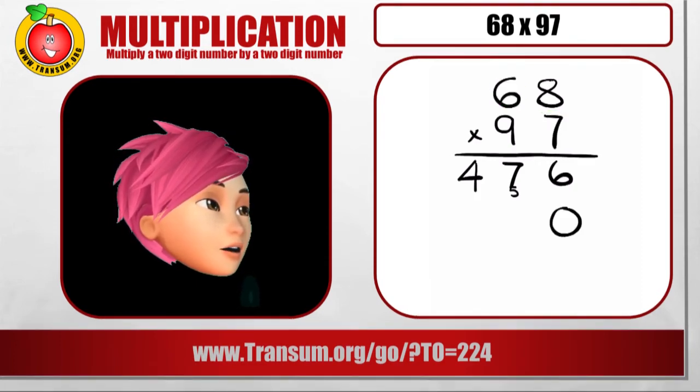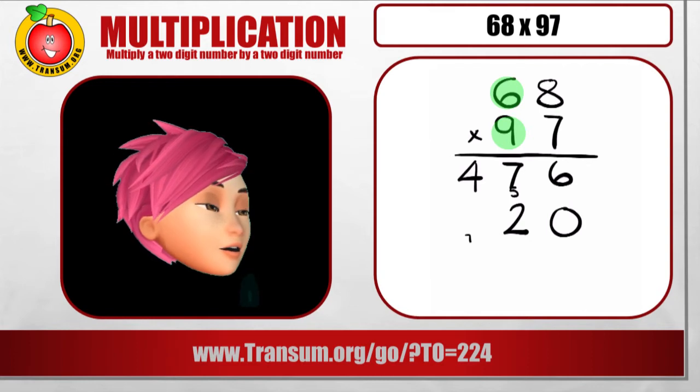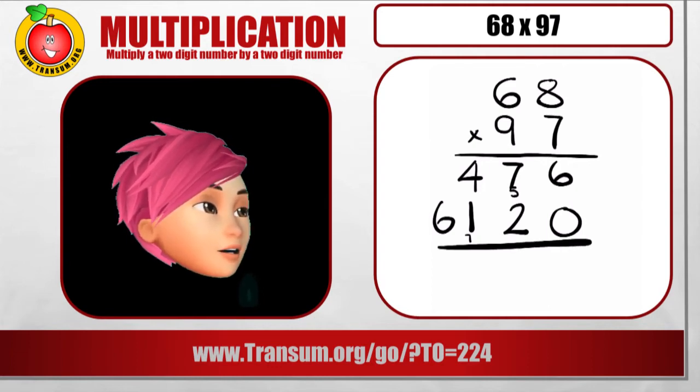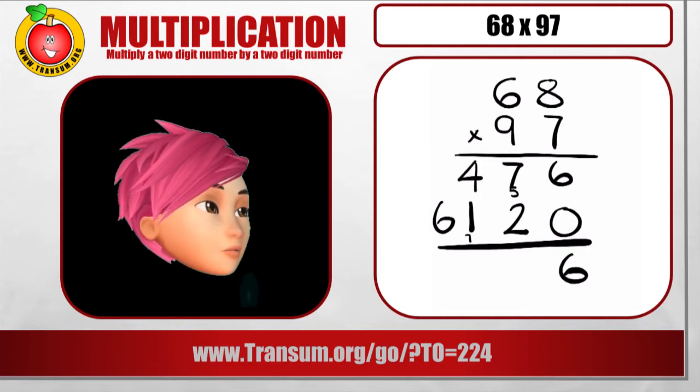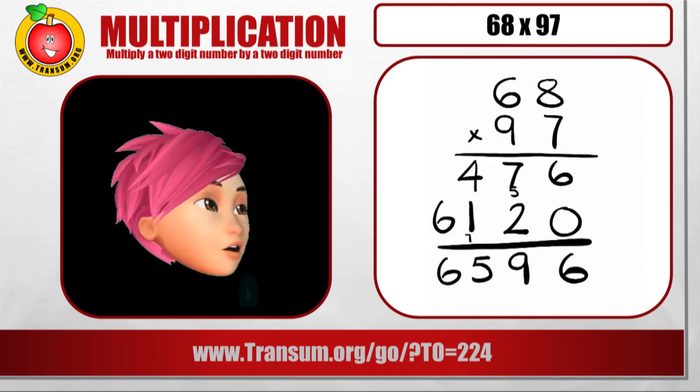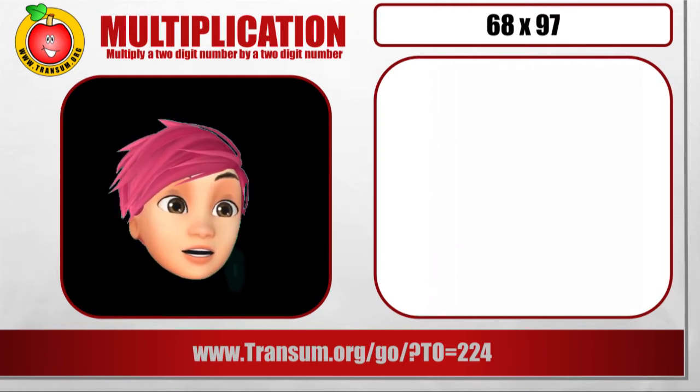Then put a 0 underneath so we can multiply by 9. 9 8's are 72. So we'll put the 2 down there. Carry the 7. And then 9 6's are 54. Add on that 7 that we carried and that makes a grand total of 61. So 6,120. Add it to the other part, the 476. And all together we get a grand total. Adding up from the right. 6,596.